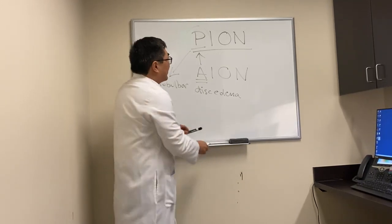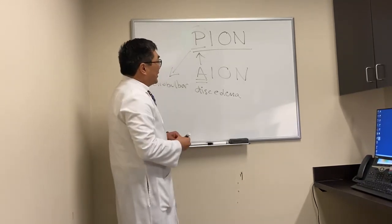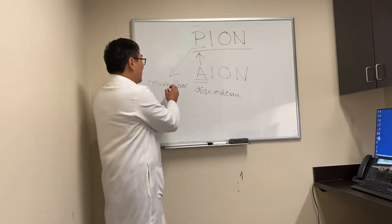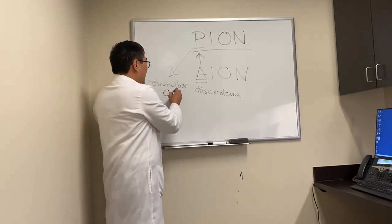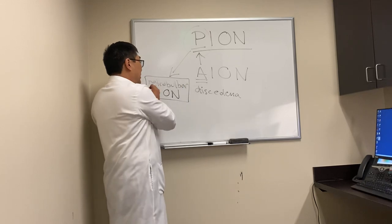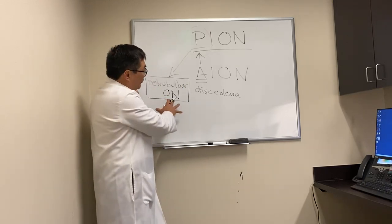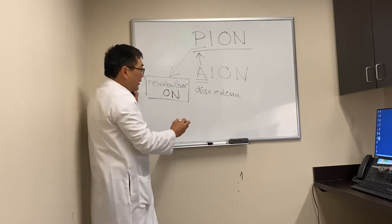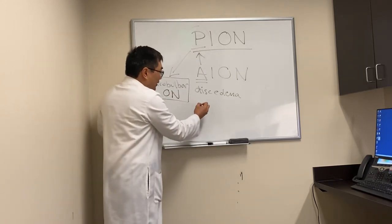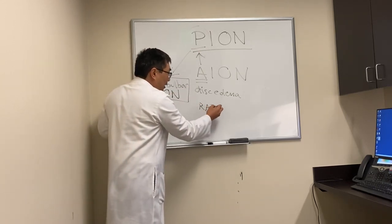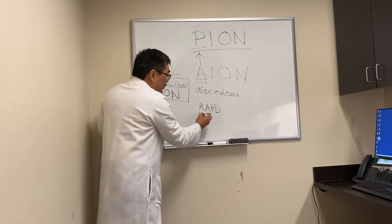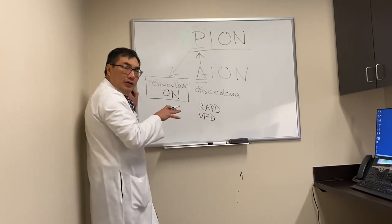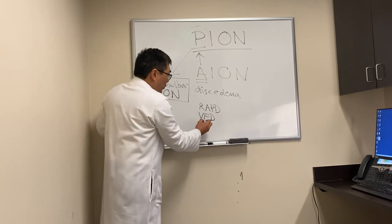This is a very dangerous diagnosis to make because there are so many things that could cause a retrobulbar optic neuropathy that have nothing to do with ischemia. Before we make a diagnosis of retrobulbar PION, we want to have clinical confirmation that there's an RAPD.